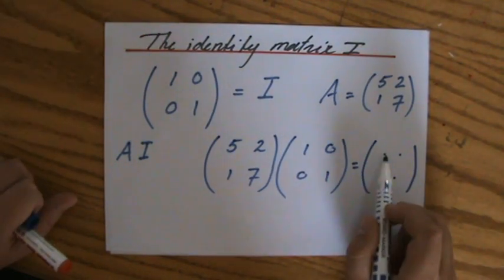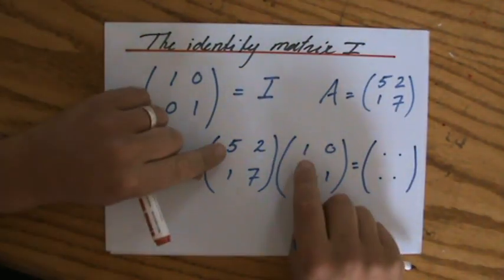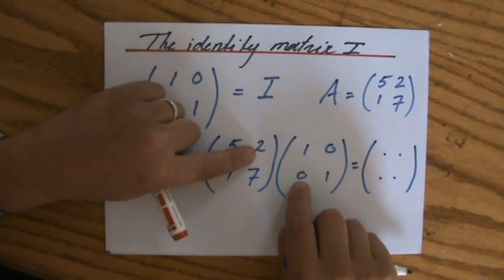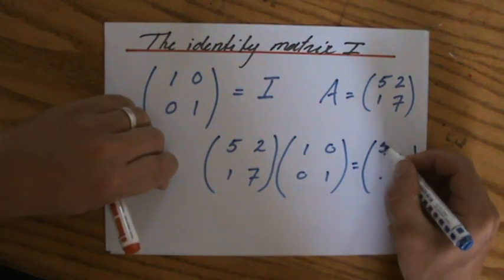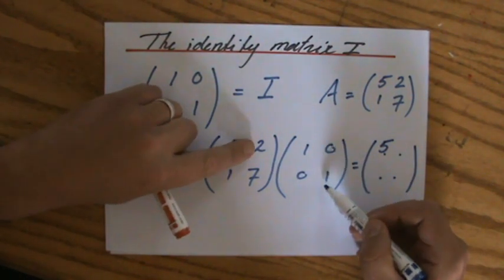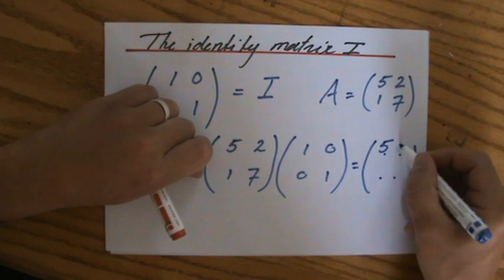Now let's find out that first piece of information. That's going to be 5 times 1, so 5 plus 2 times 0 is 0, so that is going to be 5. That second piece is going to be 0 plus 2 times 1, so that's going to be 2.